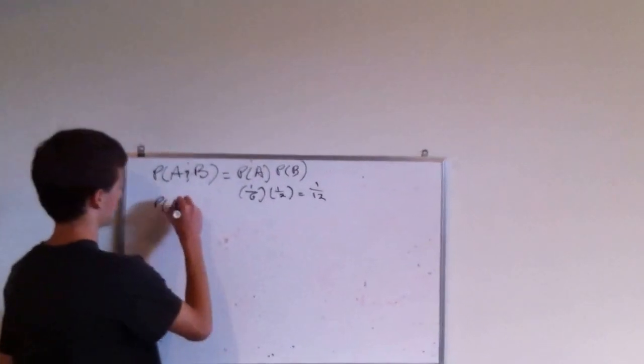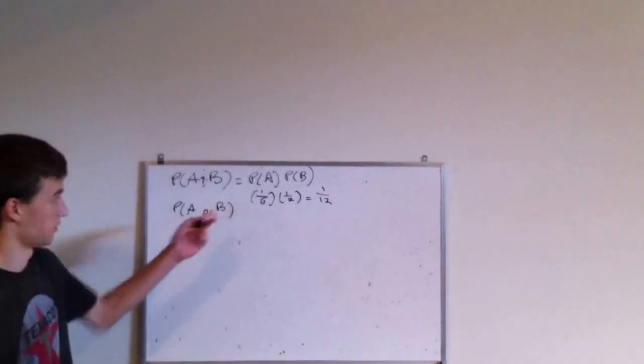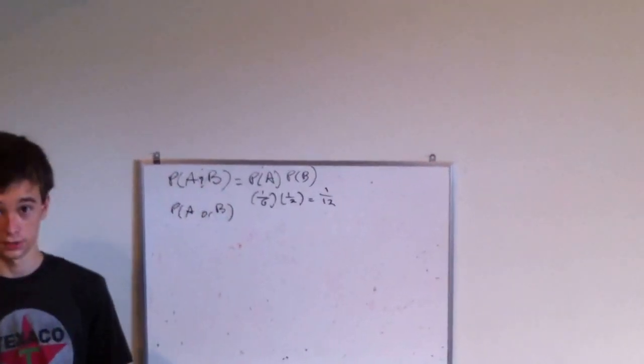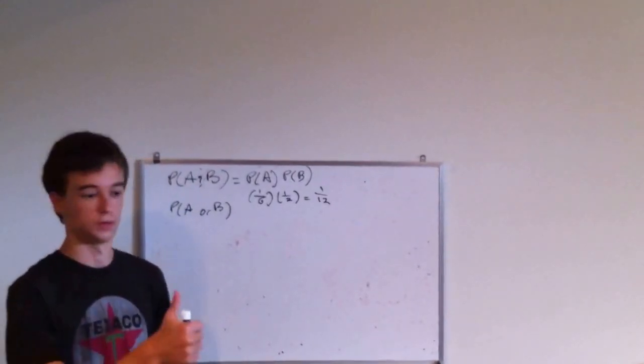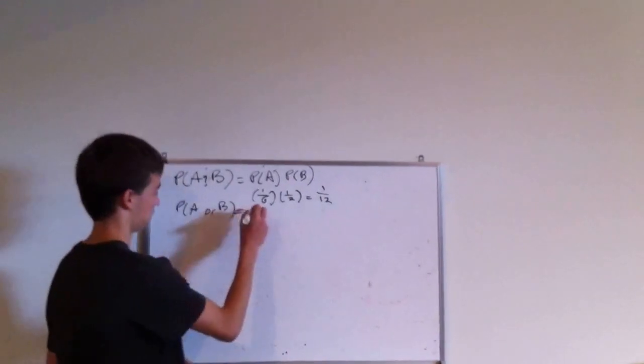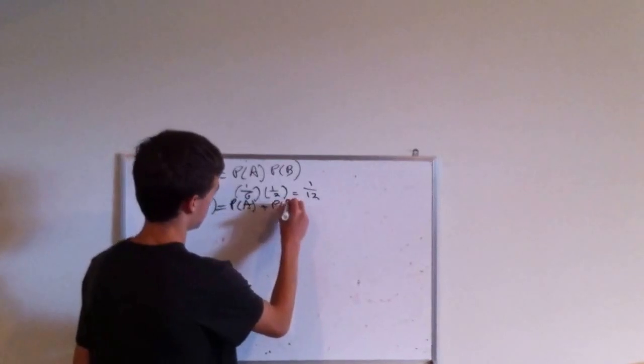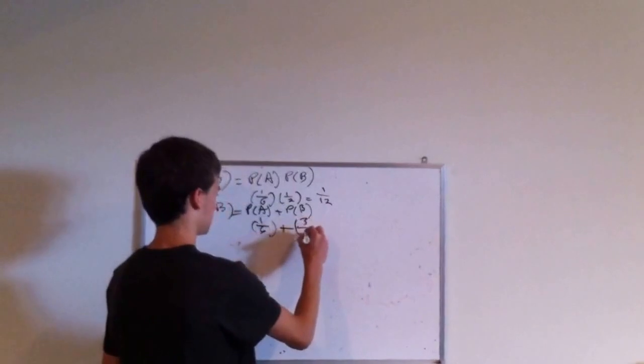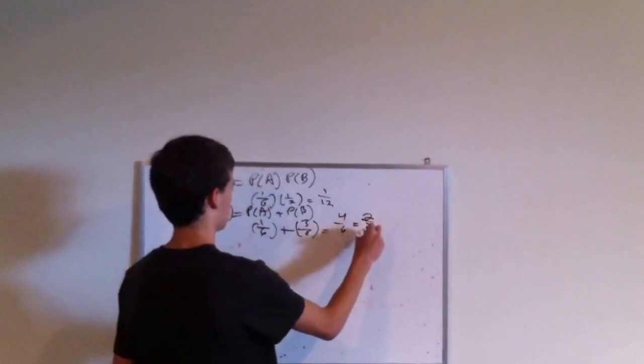Now say you want the probability of A or B. Going back to our example, the probability of rolling a 6 on a dice or getting heads on a flip, that's the probability of A plus the probability of B, which in our example would be 1/6 plus 3/6, so your answer would be 4/6, which is also equal to 2/3.